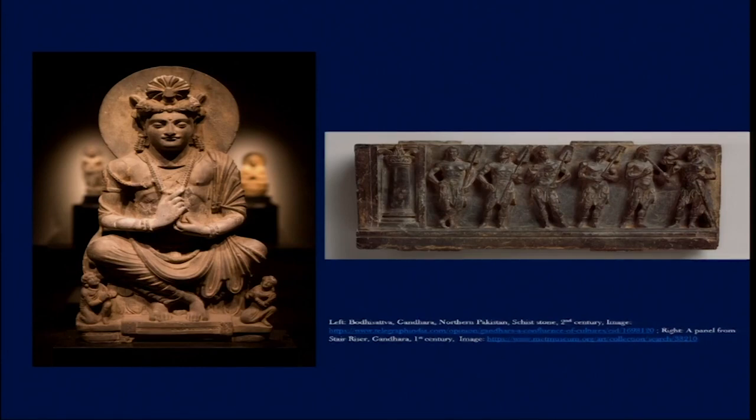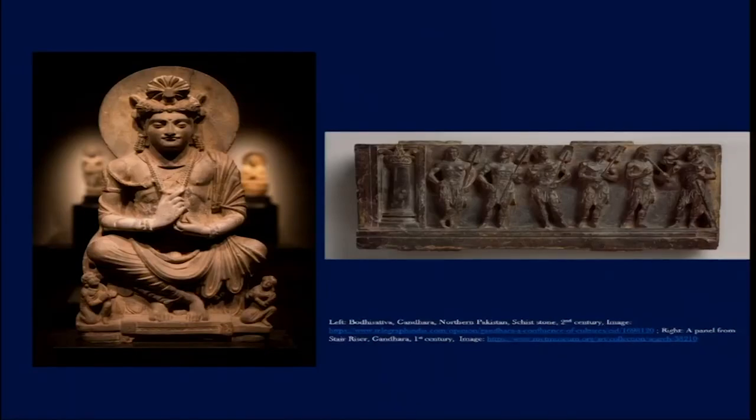And then afterwards we find the rules of the Kushanas, who came from Central Asia and ruled from Northern India. During this time period, two regions came into prominence: one is the area around Mathura in the state of Uttar Pradesh today, and the other is Gandhara, which is part of Northern Pakistan today. These are the two sites that came into prominence during the rule of the Kushanas.